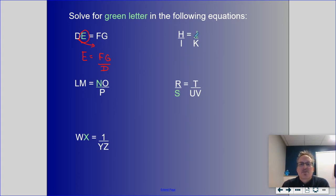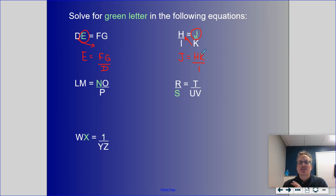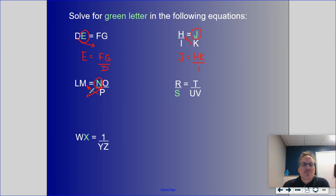Next, solving for J: K is in the basement, so when it crosses the equal sign it goes upstairs. J equals H times K over I. Remember, K times H and H times K are the same since order doesn't matter in multiplication. For the third example, solving for N: P moves upstairs and O moves downstairs when they cross the equal sign. So N equals L times M times P divided by O.